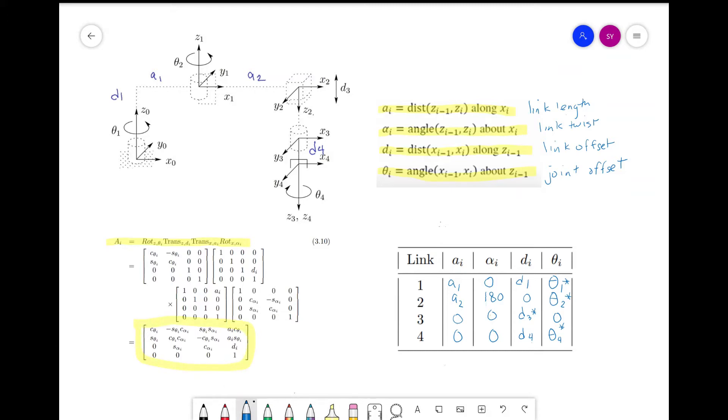For instance, we take the parameters we calculated for link 1 and substitute into the equation to get A_1. We substitute the parameters from link 2 to get A_2, and the same for A_3 and A_4.